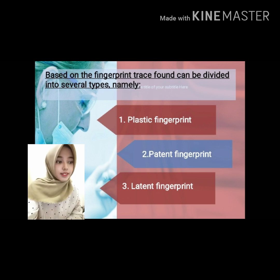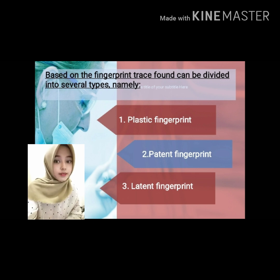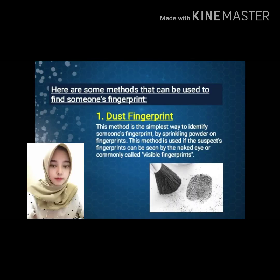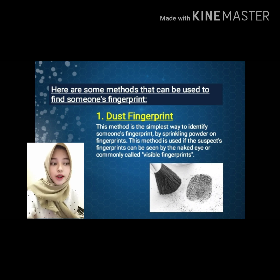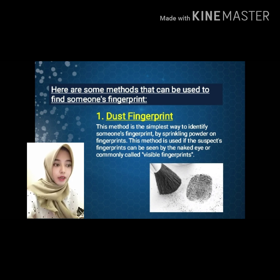Latent fingerprint traces cannot always be seen visually; to make them visible, chemicals are needed by sprinkling certain powders. Here are some methods that can be used to find someone's fingerprint. First, the powder method. This method is the simplest way to identify someone's fingerprint, by sprinkling powder on fingerprints. This method is used if the suspect's fingerprint can be seen by the naked eye, commonly called a visible fingerprint.